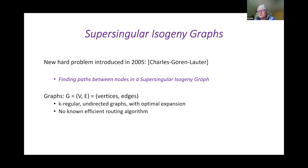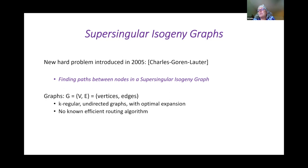If you want to use the problem of finding paths in the graph as a hard problem for cryptography, the underlying assumption is that finding those paths is hard — there's no known efficient routing algorithm. At one time, I heard a lovely talk by Ron Graham about graphs that have efficient routing algorithms. Graphs that have some kind of isometry to the hypercube are graphs where you have a good routing algorithm. Let me give the example of a hypercube.